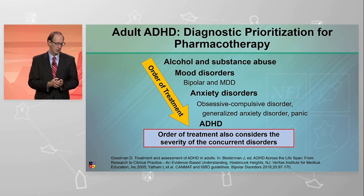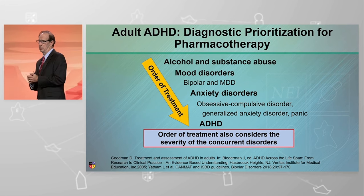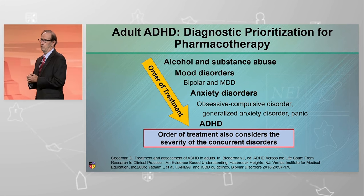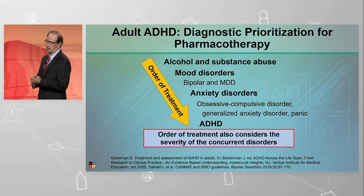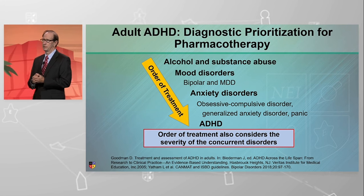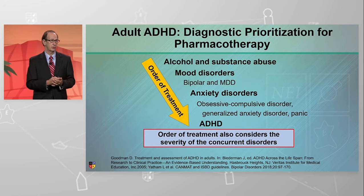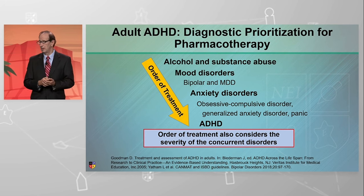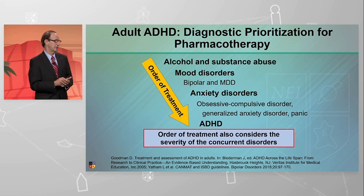I wrote this almost 20 years ago. And you look at this prioritization: it's alcohol and substance abuse first, severe mood disorder second, severe anxiety disorders third, and then ADHD last.